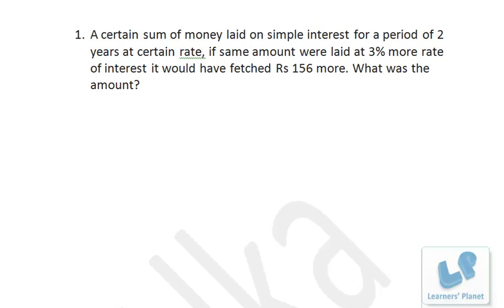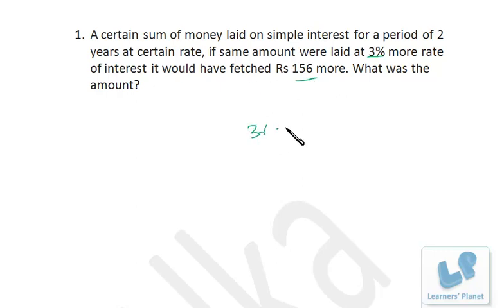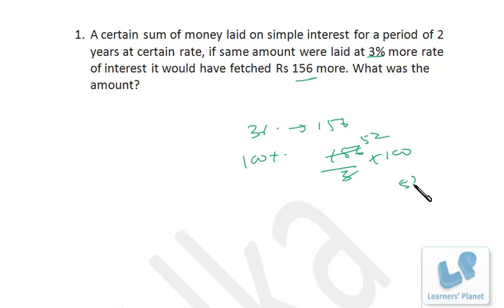Now this question is from simple interest. A certain sum of money is lent on simple interest for a period of 2 years at a certain rate. If the same amount were lent at 3% more rate of interest, it would have fetched rupees 156 more. See, the difference in rate is 3%, and that equals 156. So 100% will be 5200 — that's the principal. Pretty simple problem, not much paperwork is required.